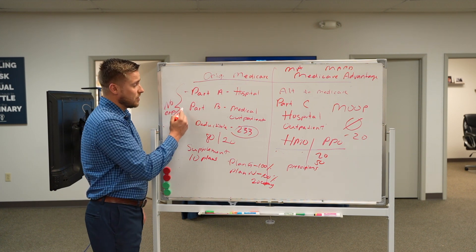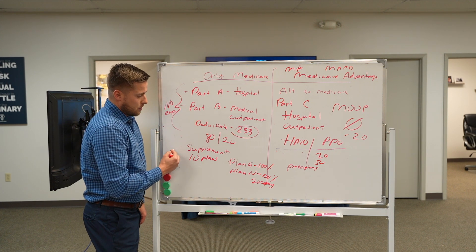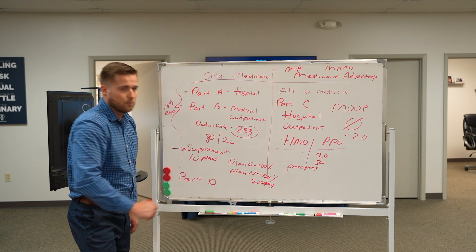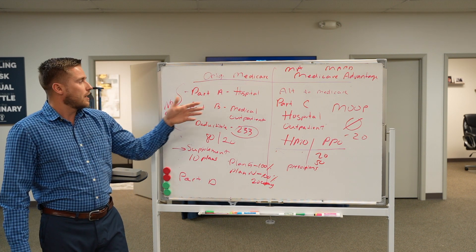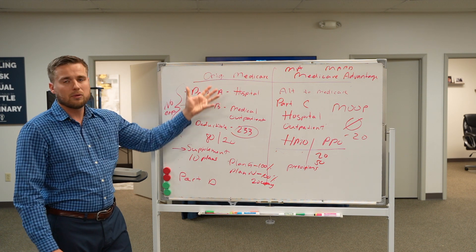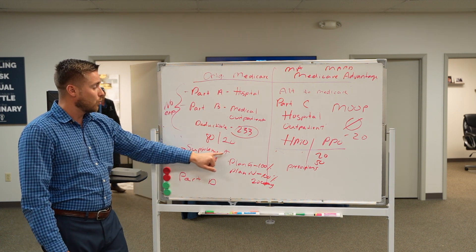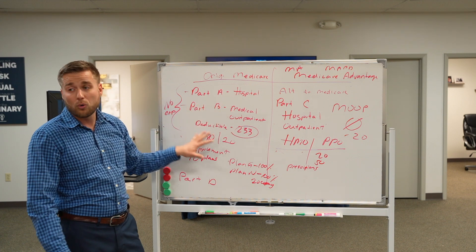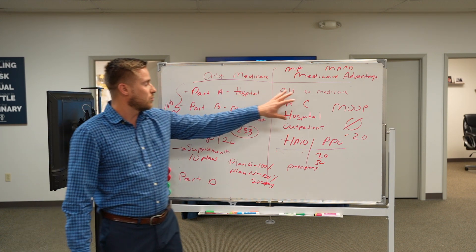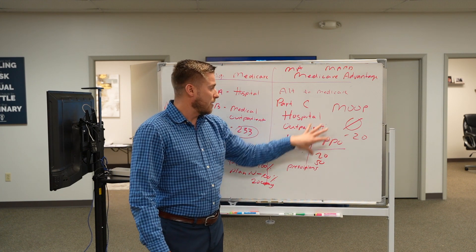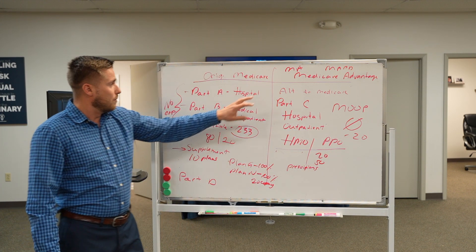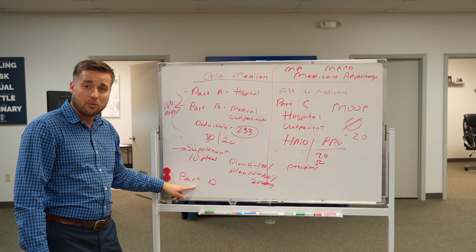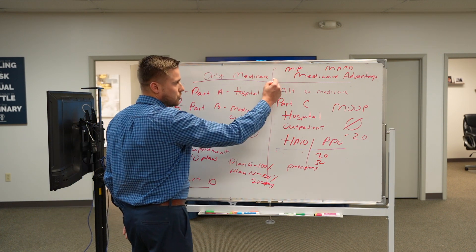With original Medicare, Part A does not include drug benefits, Part B does not include drug benefits, and supplements do not include drug benefits — so you have to have a separate Part D prescription drug plan. With original Medicare you'll have Part A hospital, Part B medical at 80/20 coverage, a supplement which is more expensive but has no network restrictions, and a separate Part D plan. You search the Part D plan the same way — by prescriptions, dosages, quantities, and pharmacy.